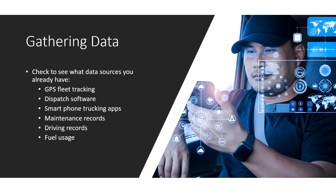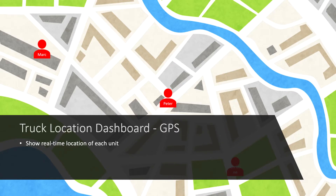The first step is to see what data sources you already have: GPS fleet tracking, dispatch software, smartphone trucking apps, maintenance records, driving records, fuel usage — figure out where they're located on your server. With GPS tracking you can show real-time locations of each of your trucks.